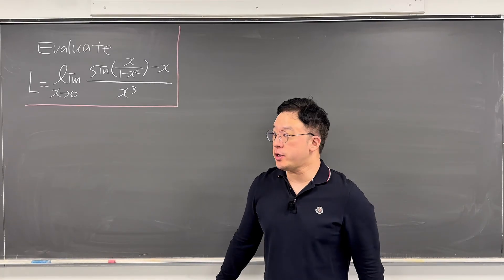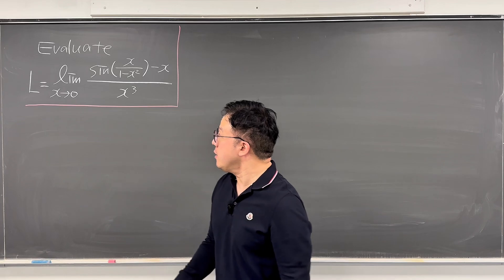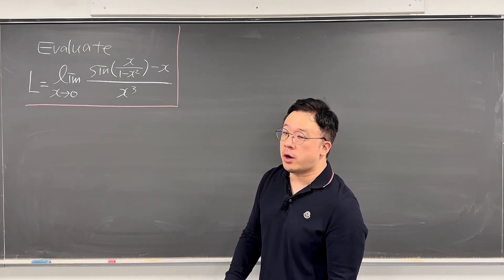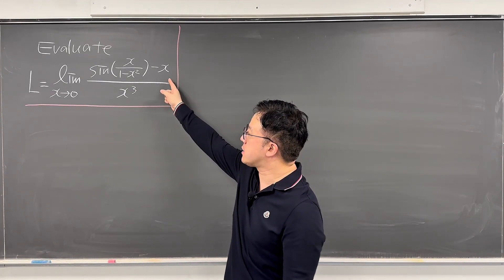Okay, here's the question. The question is evaluate this L, that is limit as X goes to 0, sine of X over 1 minus X squared, minus X, over X cubed.